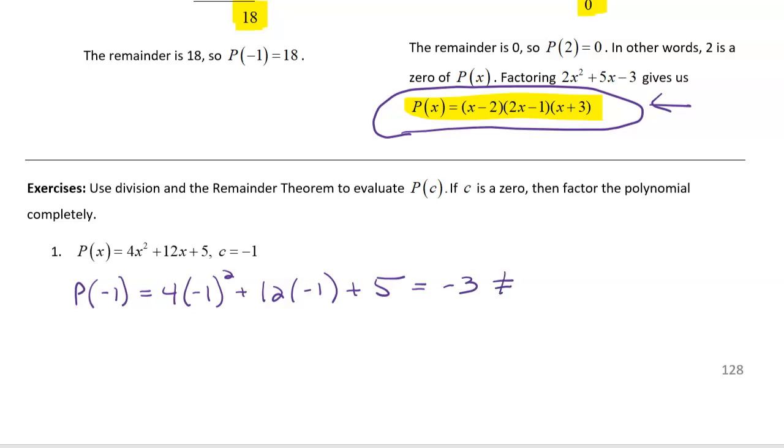So the fact that this is not equal to 0 tells us that negative 1 is not a zero of p of x, and we also cannot use x plus 1 as a factor. And so if I was to try to use x plus 1 as a factor, then we're going to run into some issues with setting up that polynomial.